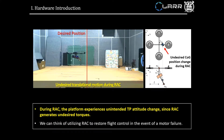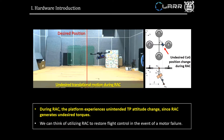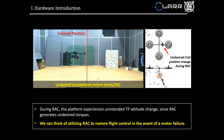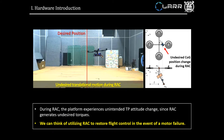During RAC, however, the platform may experience undesired translational motion due to the unintended TP attitude change, since RAC relocates the center of gravity position and changes the thrust model to generate undesired torques. But since RAC results in the generation of additional attitude control torques, we can think of utilizing this feature to restore flight control in the event of a motor failure.